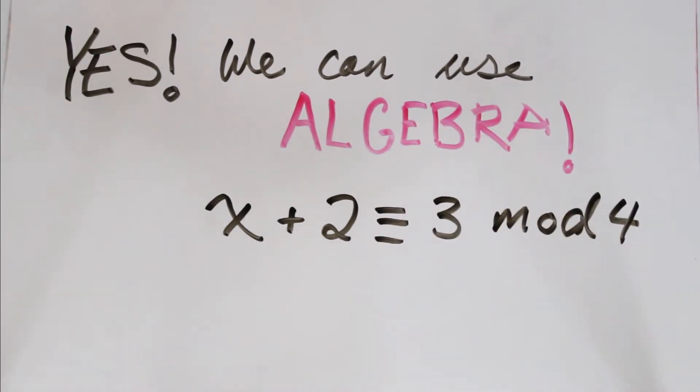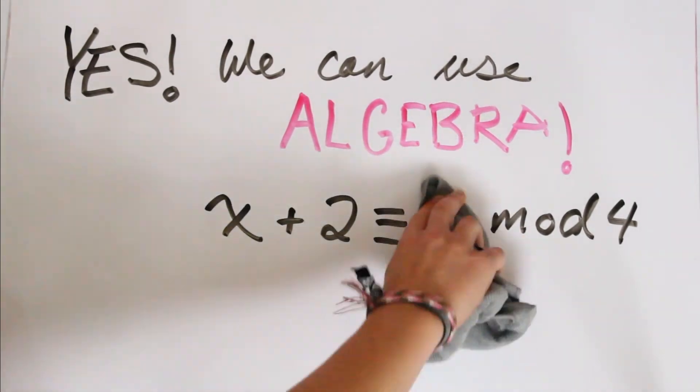So I want you to consider this equation right here: x plus 2 is congruent to 3 mod 4. We can just solve it by subtracting 2 from each side, and then we get x is congruent to 1 mod 4.